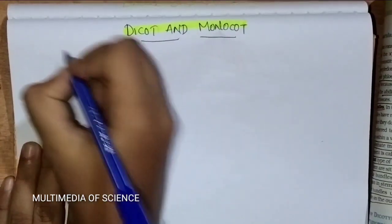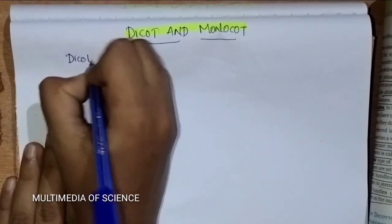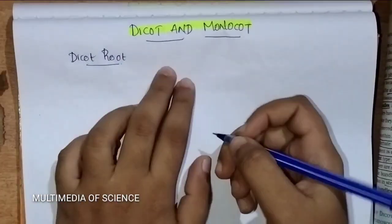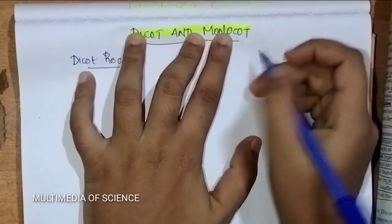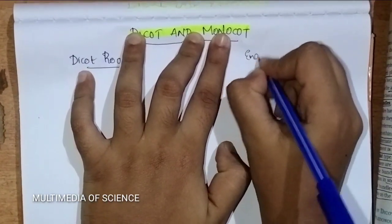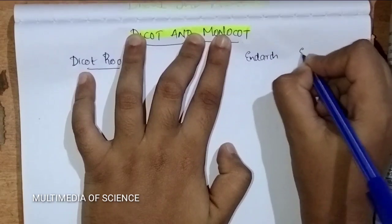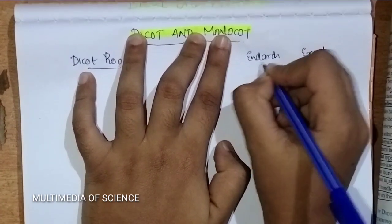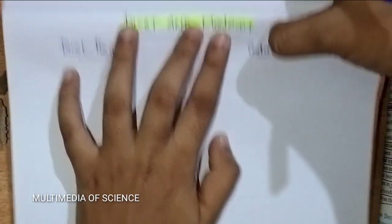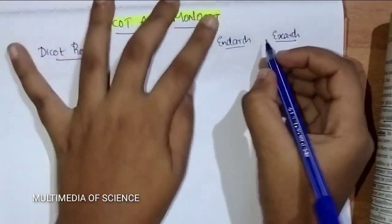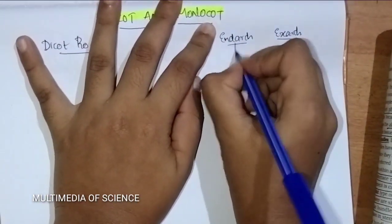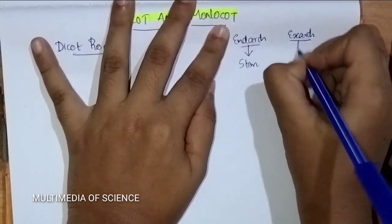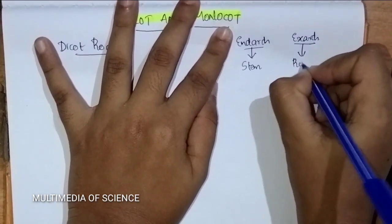So first I am discussing about the Dicot root. But just before that I want to discuss about Endarch and Exarch. Endarch and Exarch — it is much more difficult for some students. So Endarch is seen in the stems and Exarch is seen in the root.